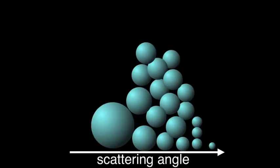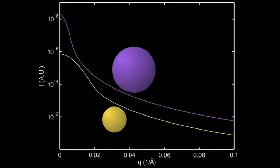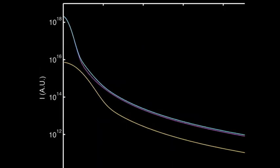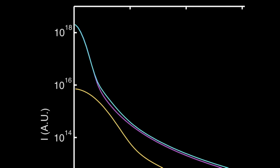We have a slight advantage: the scattering pattern of spheres shows maxima in different regions, which may partially compensate for the volume scaling effect. To examine this, let's imagine two particles — one with a radius of gyration of 200 angstroms and the other with 500 angstroms. In blue we have the total scattering pattern. We immediately see that the intensity scaling at zero angle is massive — there is a huge gap of several orders of magnitude between the scattering functions of the two spheres.